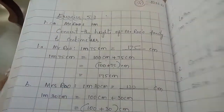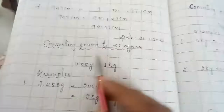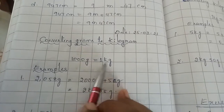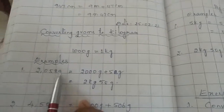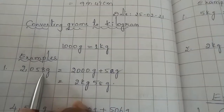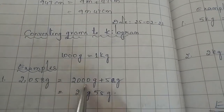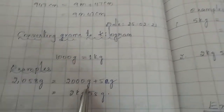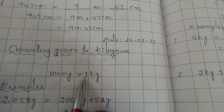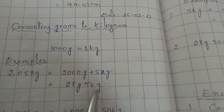Yesterday we discussed weight. Now, how to convert grams to kilograms and kilograms to grams. 1000 grams is equal to 1 kg. One example is given here — 2058 grams. We need to convert this to kilograms: 2058 means 2000 grams plus 58 grams. 2000 grams equals 2 kg, so the answer is 2 kg 58 grams.